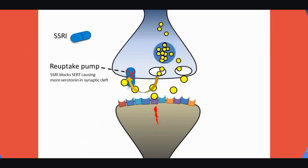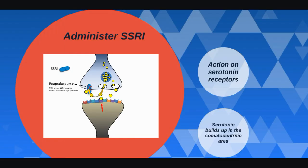Now what happens when we administer an SSRI? An SSRI blocks this reuptake pump, therefore blocking the reuptake of serotonin into the pre-synaptic neuron. As a result, there is lots of serotonin available in the synaptic cleft to act on the specific receptors.